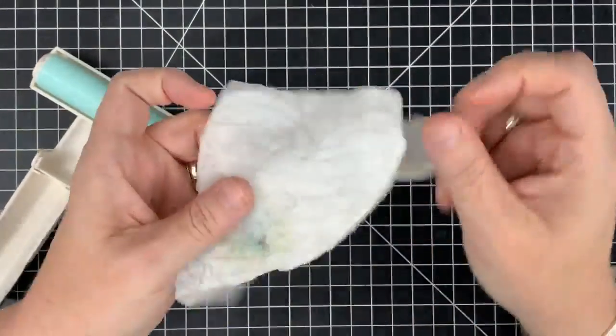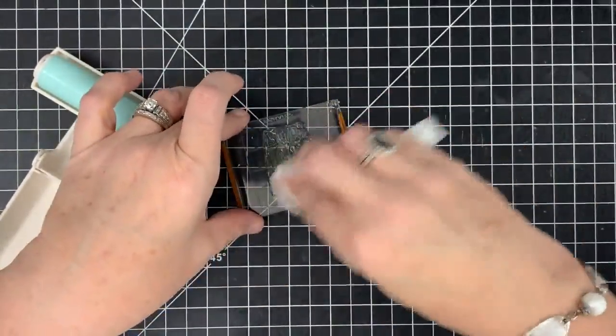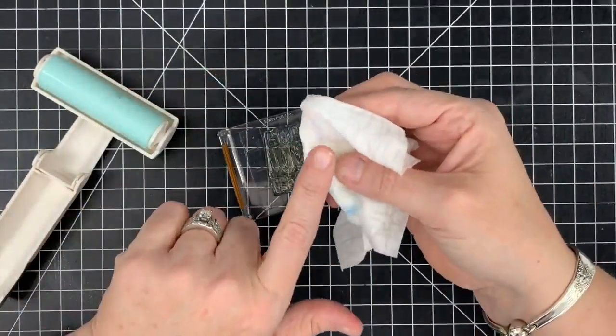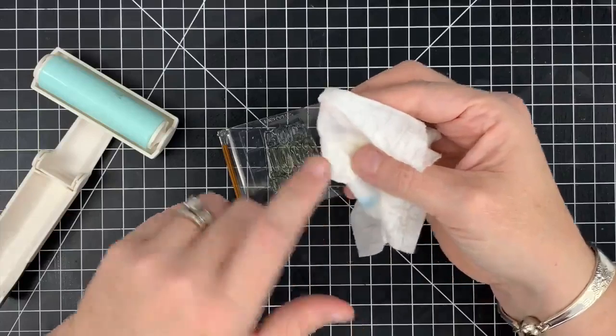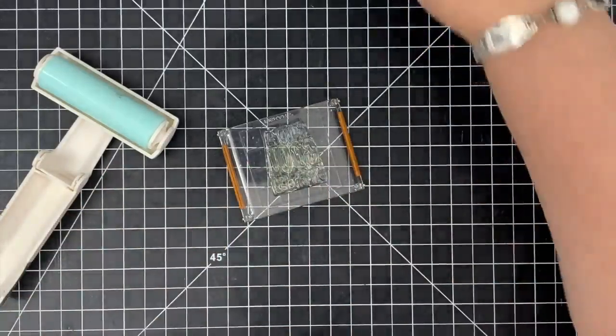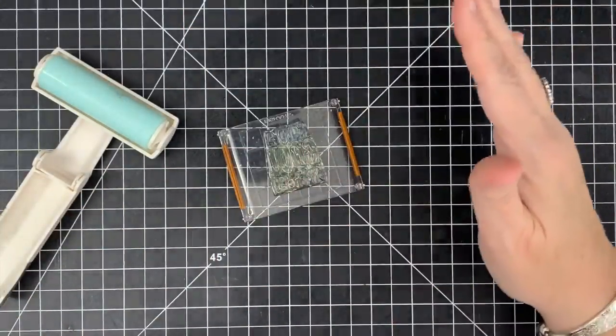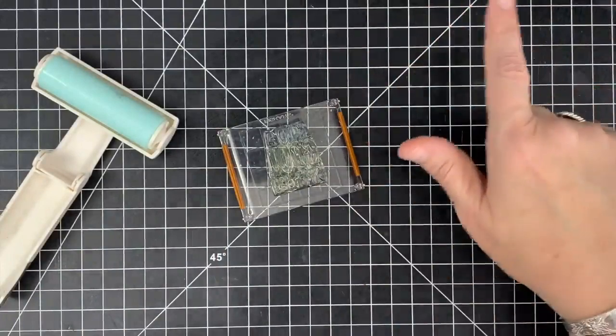Anytime you take a wet wipe and you rub it directly onto your stamp like this you can take a chance of getting lint or little pieces that'll start to peel up and get onto here. It's not a big deal. You can clean that off and one thing you can do is not use a wet wipe at all.